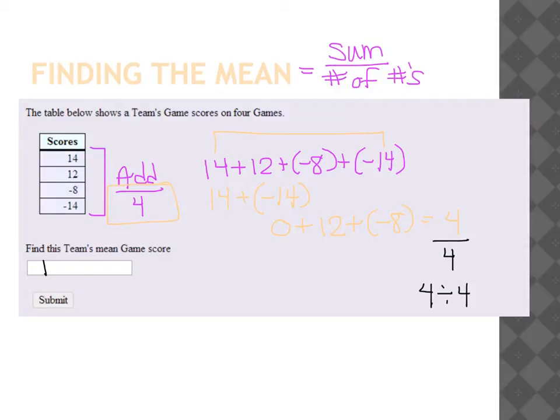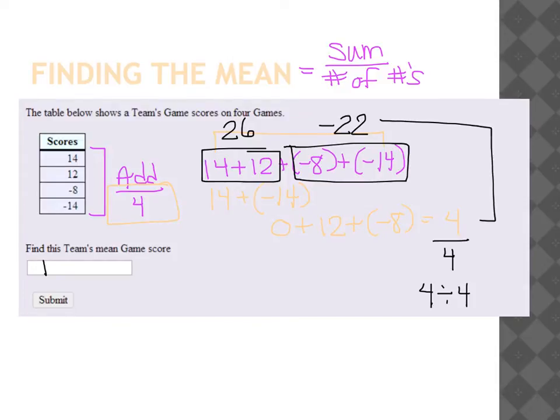Another way that you could have approached this problem is instead of looking for opposites, like I saw 14 and negative 14, you could have also added the positives together, which would have given you 26, and then added the negatives together, which would have given you a negative 22, and then combined the result to give you the sum of 4, just like we did.